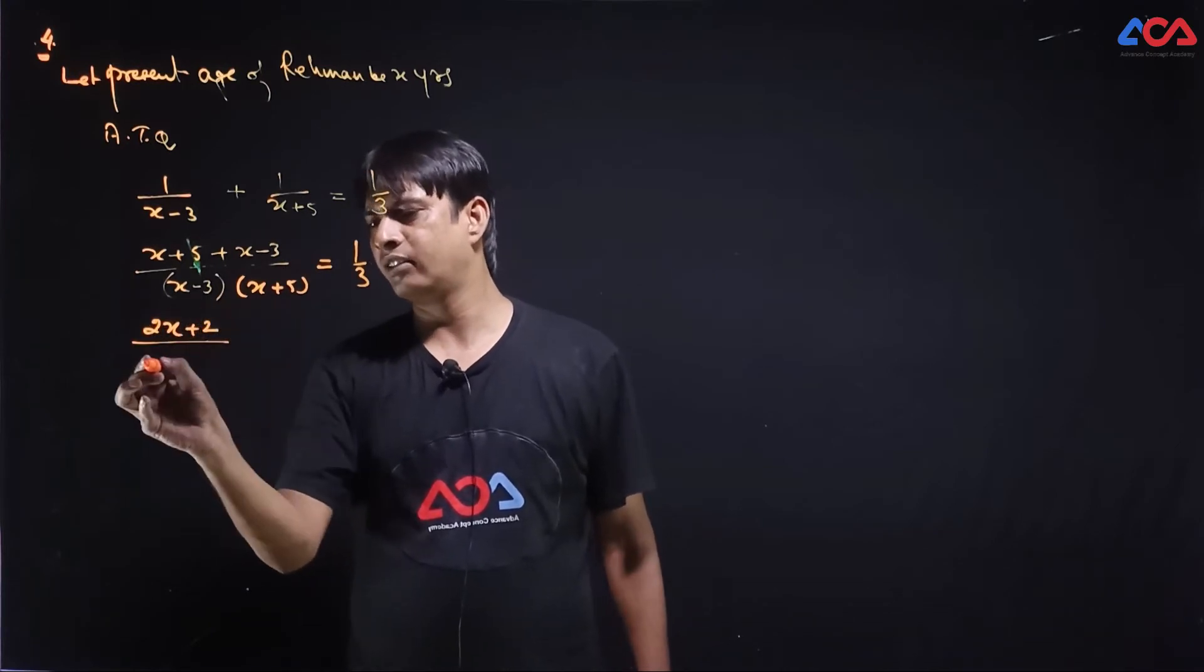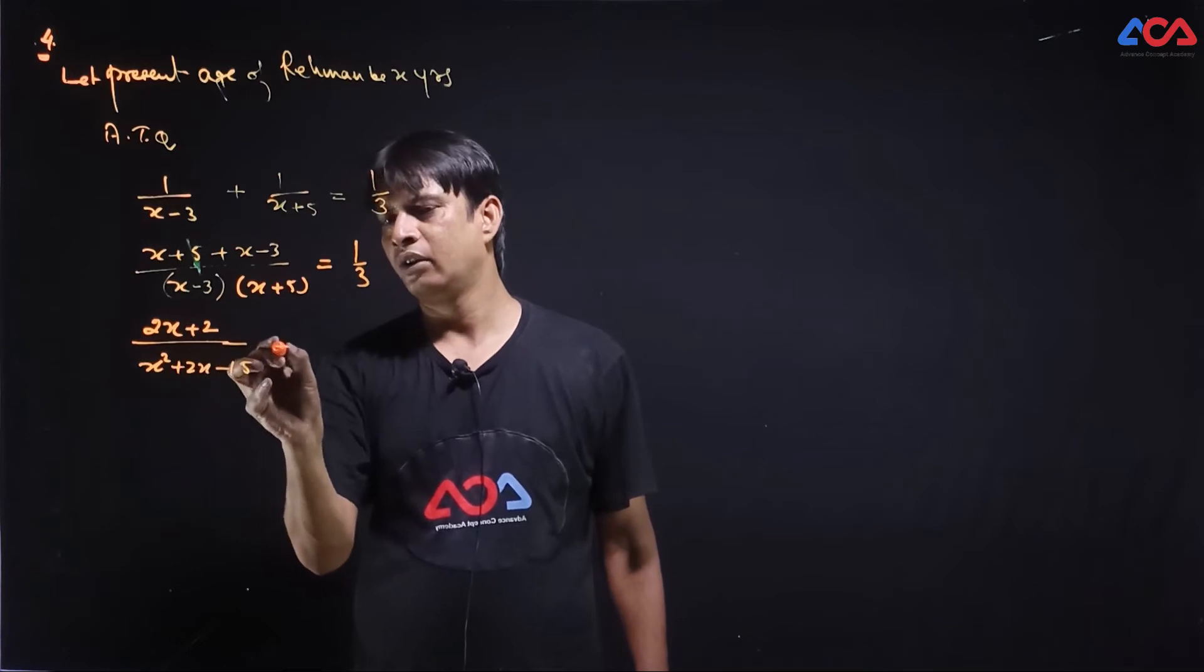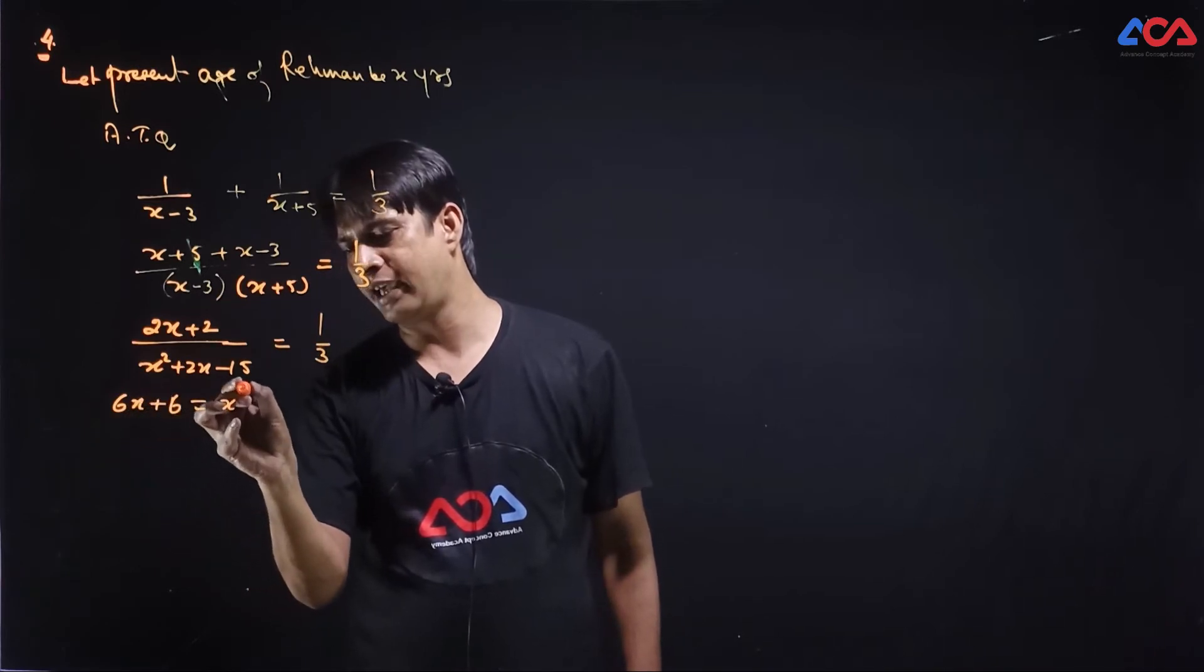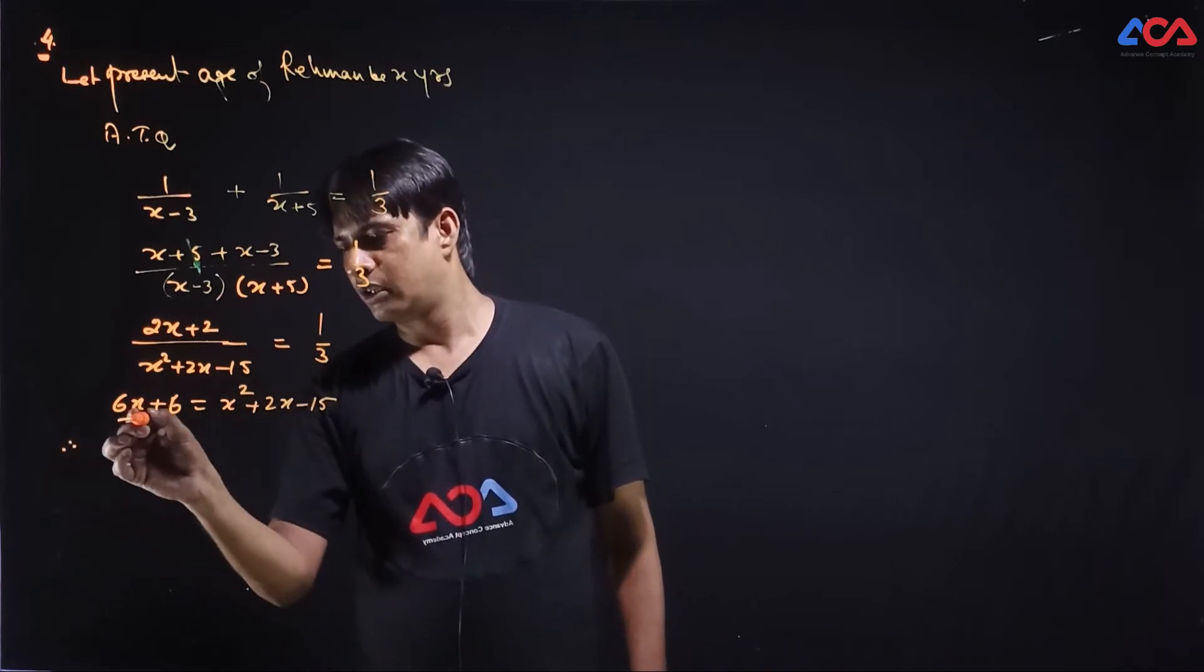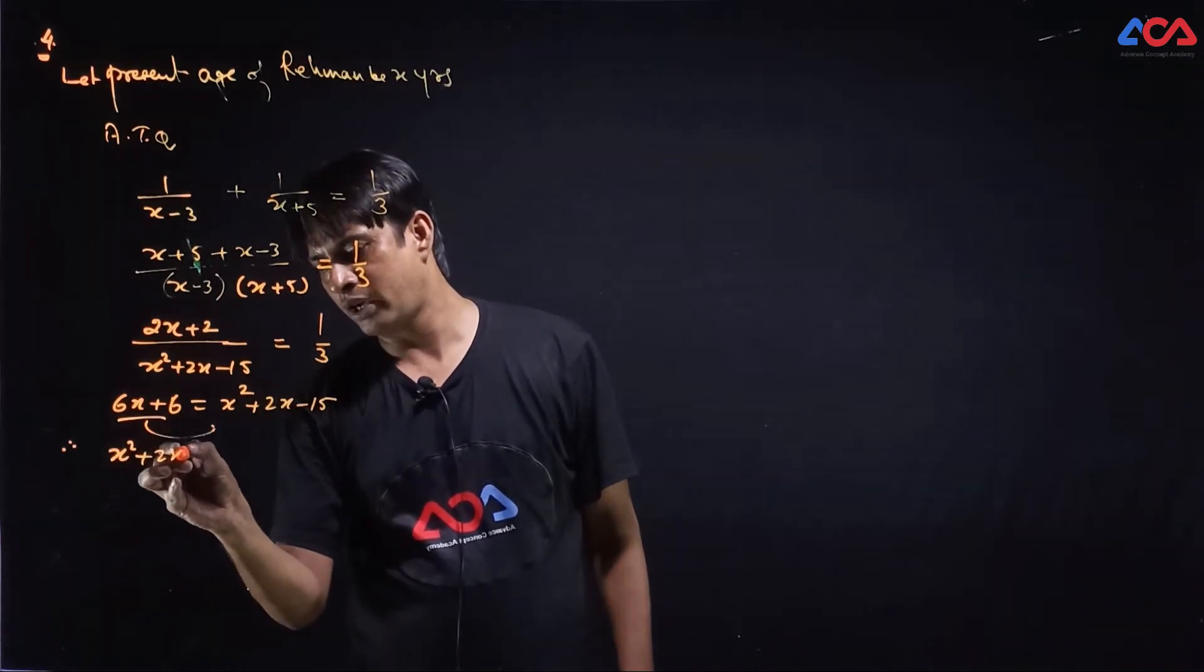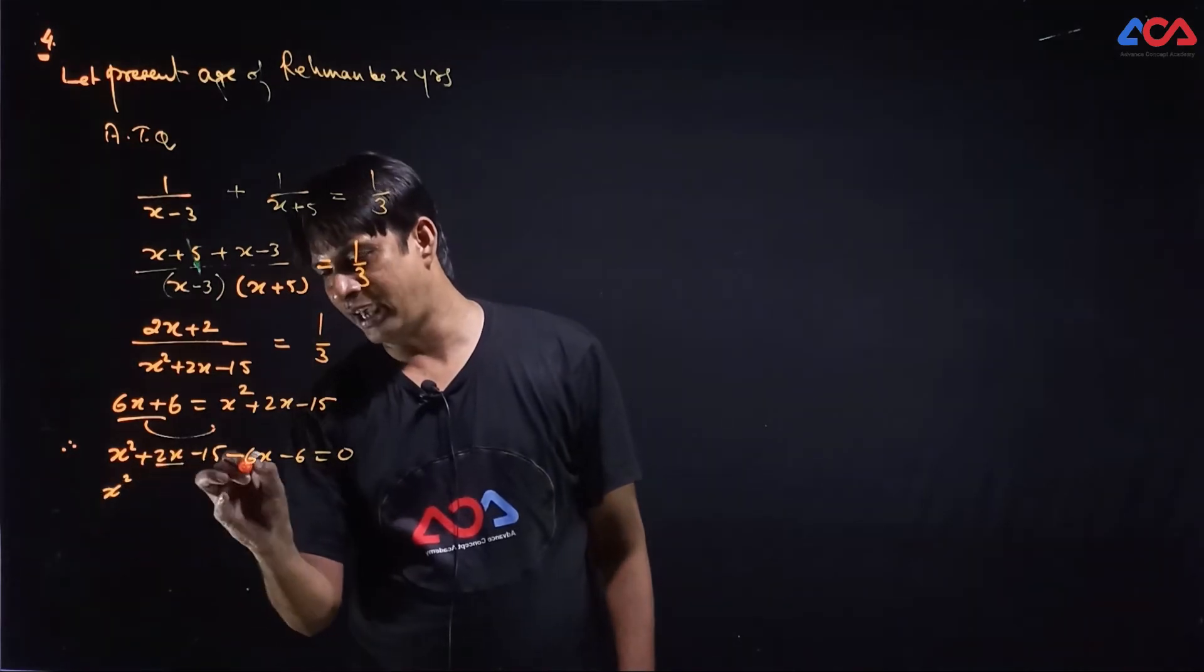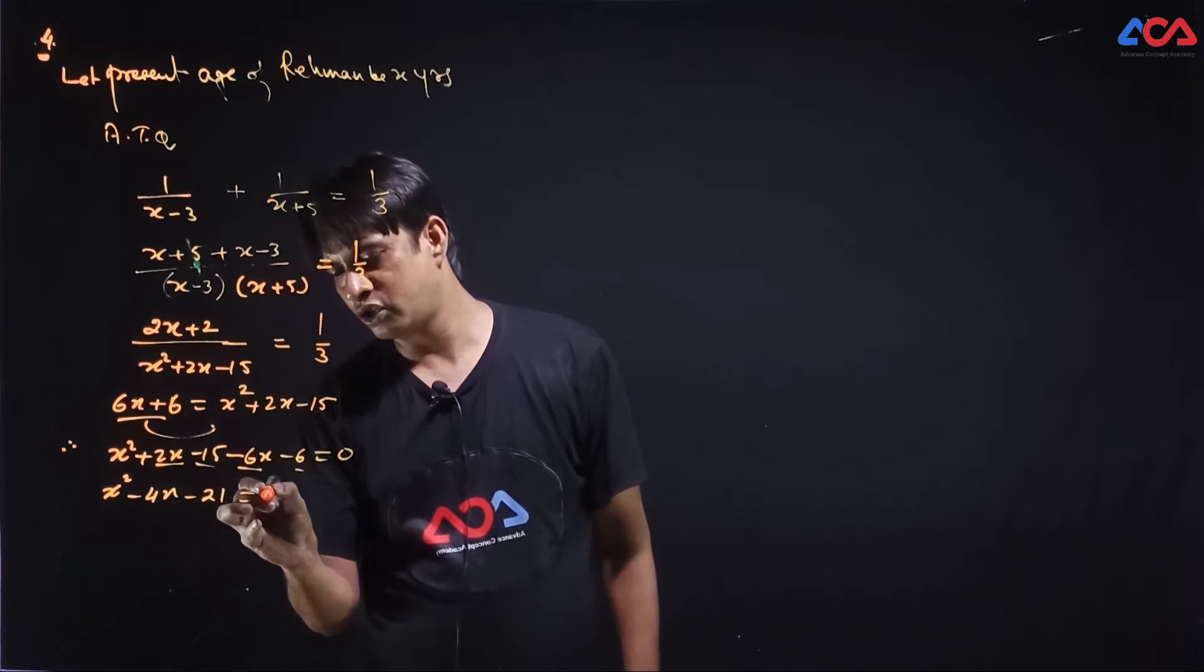x square plus 2x minus 15 which is equal to 1 upon 3. Cross multiply then 6x plus 6 which is equal to x square plus 2x minus 15. Therefore right side, 6x plus 6 to right side. Then x square plus 2x minus 15 minus 6x minus 6 is equal to 0. x square 2x minus 6x minus 4x minus 21 which is equal to 0.